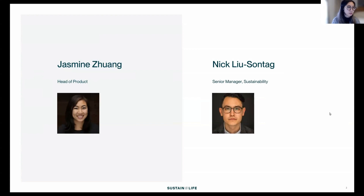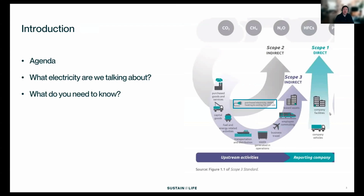Thank you for coming. Just to set the stage, we're going to start off with some specific information about electricity grids and electricity markets. This is going to be tailored for the United States, but the principles apply regardless of where you are in the world. And then after that, I'll hand it over to Jasmine for a demo in our app showing how to account for electricity emissions. Today we're talking specifically about your scope two electricity — electricity that you're purchasing or acquiring from a third party and using within your own operations.